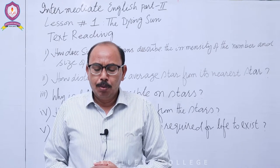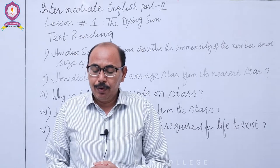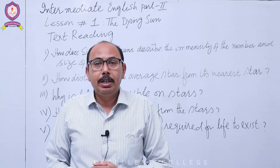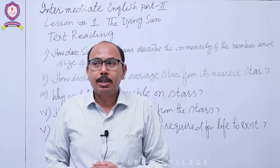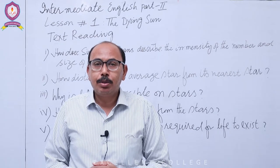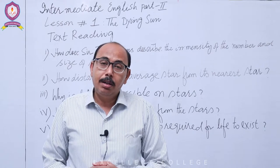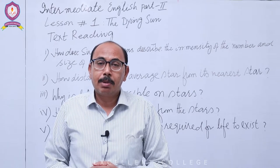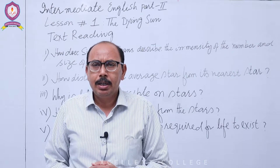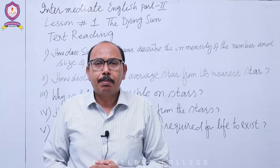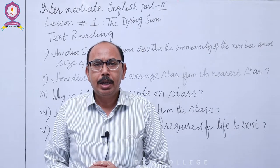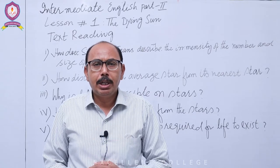لاکھوں زمینیں بھی pack کریں تو پھر بھی جگہ بچ جائے۔ 'Here and there we find an immense star large enough to contain millions and millions of us' — کہیں کہیں ایسا بڑا ستارہ ملتا ہے جس میں کروڑوں زمینیں pack کی جا سکتی ہیں۔ 'immense' کے معنی بہت بڑا ہیں — اس کے synonyms کا ذکر text reading کے آخر میں کریں گے۔